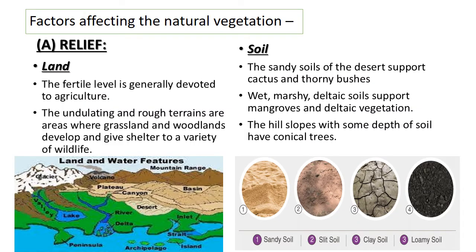Let us discuss the factors affecting natural vegetation. Under the first category, relief, we have land and soil. You will find different types of vegetation on different types of land. For example, mountains and plains will have different types of trees. The fertile plain land is generally devoted to agriculture, while undulating and rough terrains are areas where grassland and woodlands develop and give shelter to a variety of wildlife.